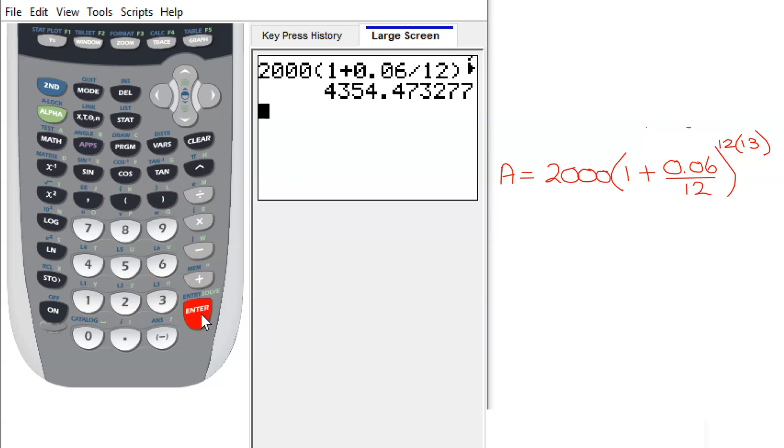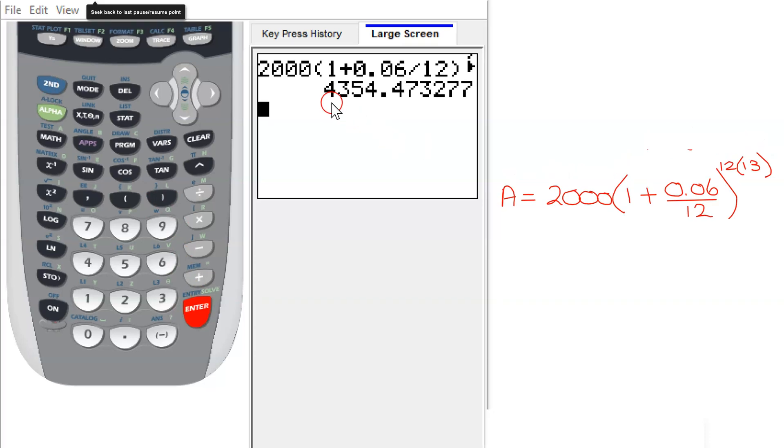And now I can hit Enter. And there is my answer. So you can see this is the amount I'm going to have in my account after 13 years. Money, we always round to the nearest cent, which is this position here. So the 3 is going to leave the 7 alone. So I have $4,354.47 in my account.